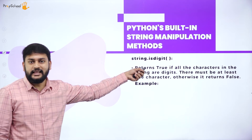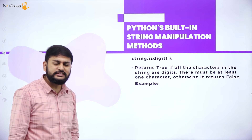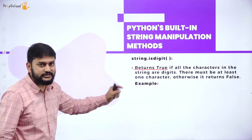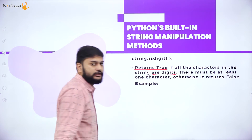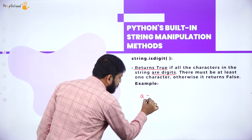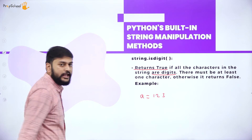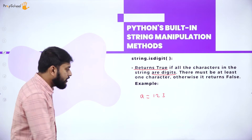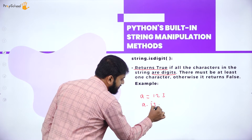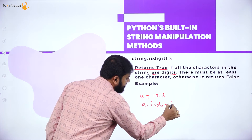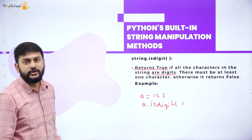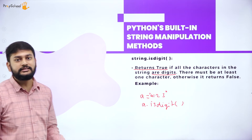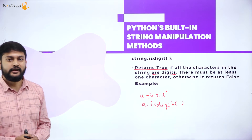The next method is isdigit(). It returns True if all the characters in the string are digits. For example, if a = '123', then a.isdigit() returns True. If the string contains non-digit characters, it returns False.